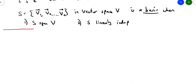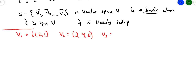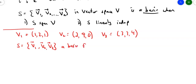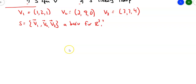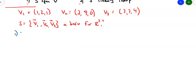Let's take a look at this example. Suppose v1 = (1, 2, 1), v2 = (2, 9, 0), and v3 = (3, 3, 4). I want to know: does the set {v1, v2, v3} form a basis for R3? We need to show two things: that it spans, and that it is linearly independent. If it spans, it contains all possible linear combinations. If it is linearly independent, solving gives us only the trivial solution. Let's check spanning first.